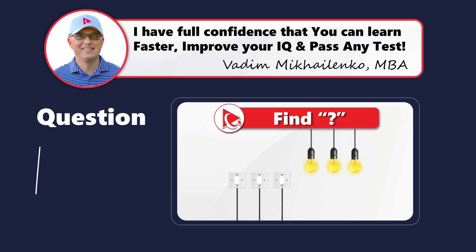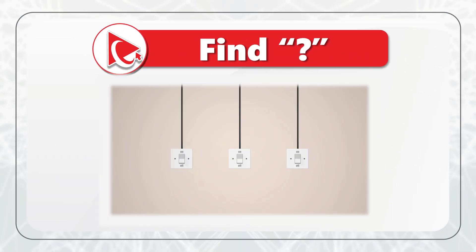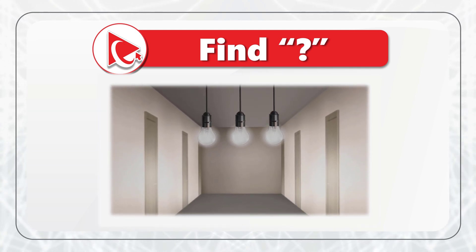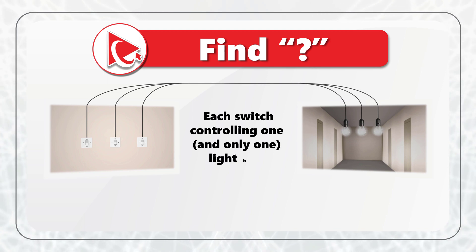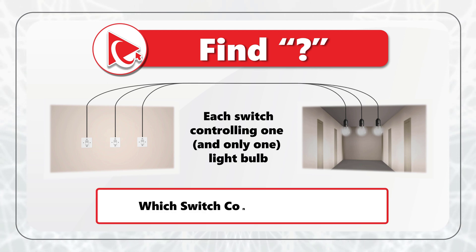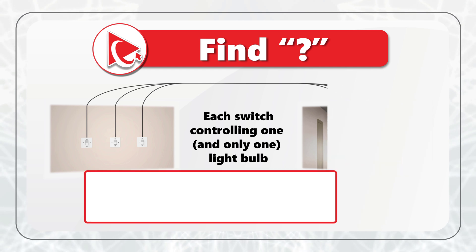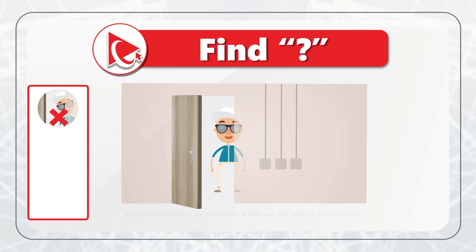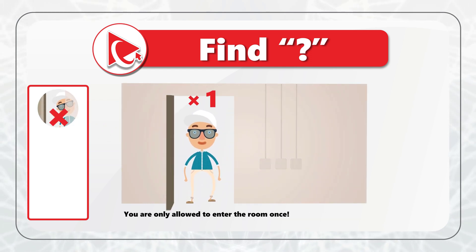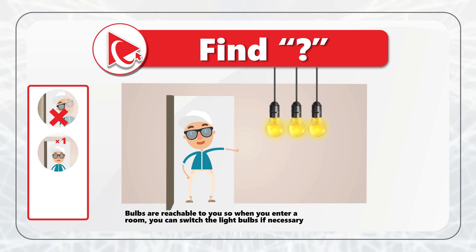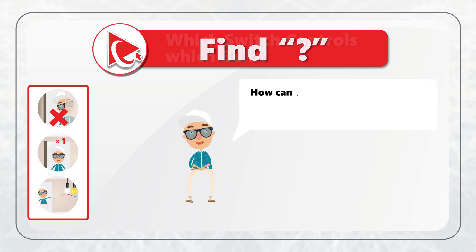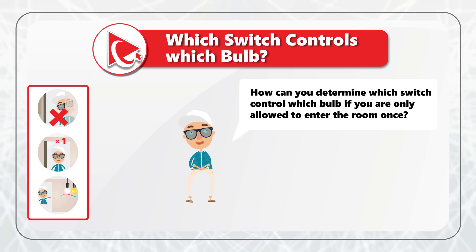Here is a tricky problem, but I have full confidence you will be able to solve it. You have three switches outside the room and three light bulbs inside the room, with each switch controlling just one and only one light bulb. You need to determine which switch controls which bulb, but there are some limitations: you cannot look inside the room while you're setting the switches, and you're only allowed to enter the room once.